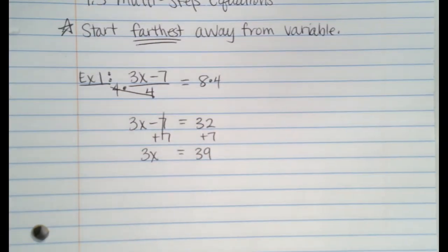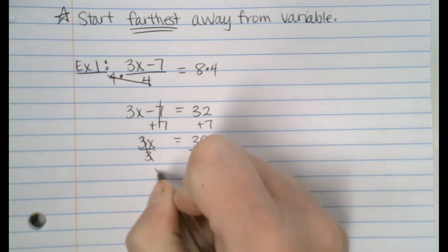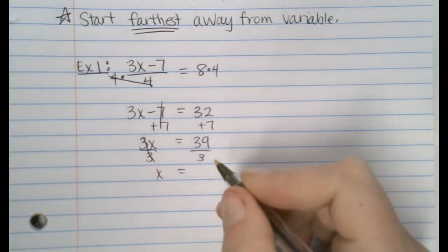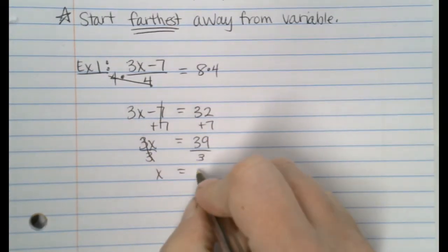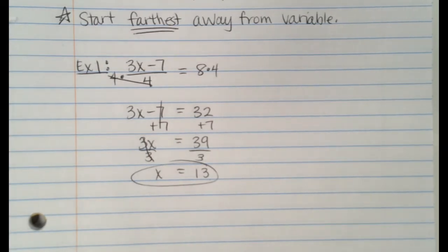And then how do we get rid of that 3? Divide. And then 39 divided by 3 is probably 13. Can anybody check for me? And there we go. So, good news. We already know how to do these steps. These equations we're doing today just take a little bit longer. To me, these are funner because they're a little bit more challenging. But I'm a nerd.